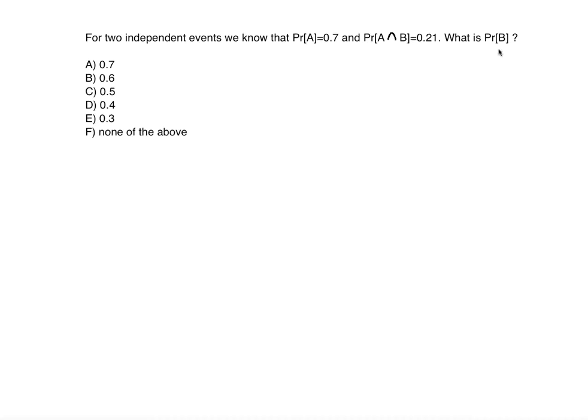What is the probability of B? So first we should know that probability of A and B is equal to probability of A times the probability of B whenever A and B are independent.